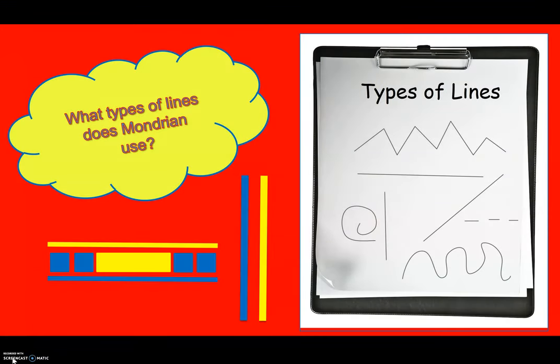What types of lines does Mondrian use? He uses lines that are vertical — that means they go up and down — and horizontal, that means they go straight across. Some are thin, some are thick.